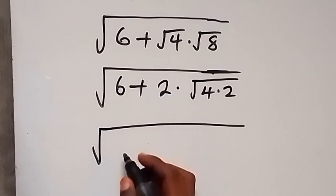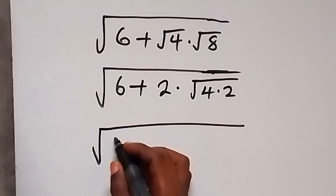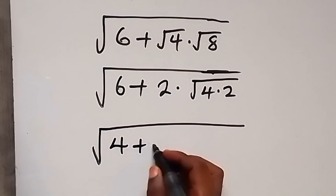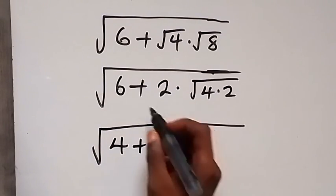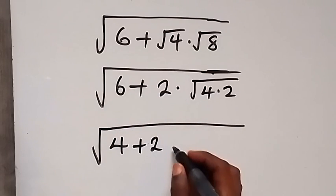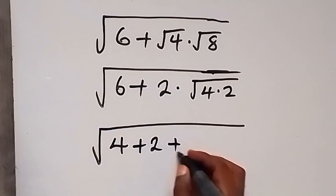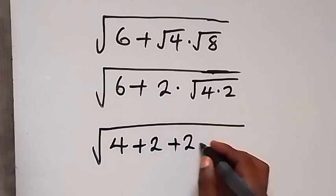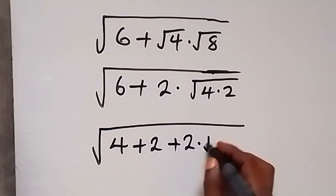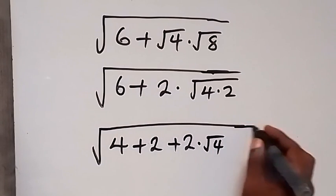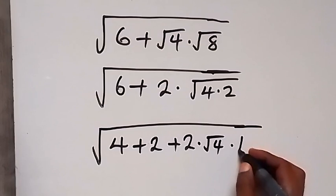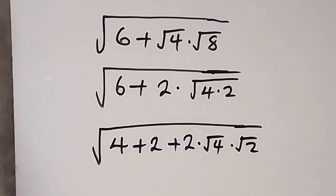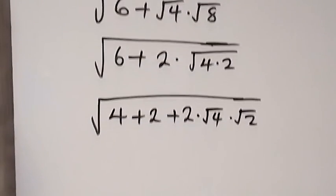In the next step, we can separate 6 as 4 plus 2. So 6 is written as 4 plus 2, then plus 2 times root 4 times root 2.